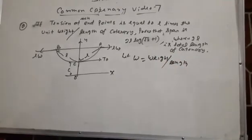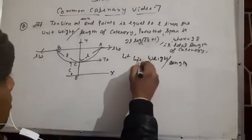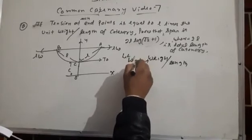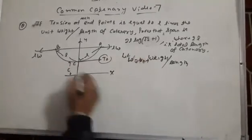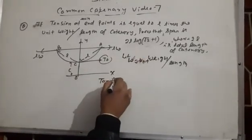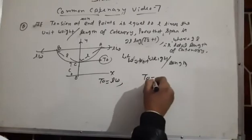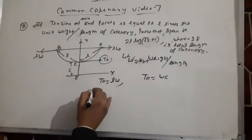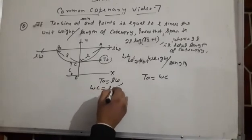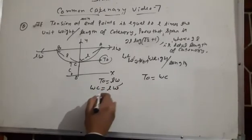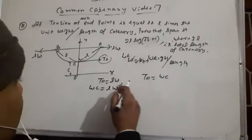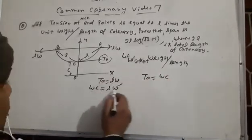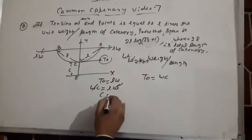Here tension T₀ equals lω. Since T₀ = wc, we have wc = lω. Canceling w gives c = l.